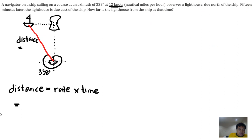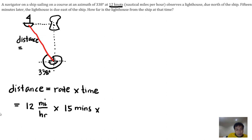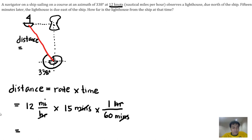The distance is 12 miles per hour times 15 minutes. To convert, we multiply by (1 hour / 60 minutes) so the minutes and hours cancel, leaving only nautical miles. So 12 times 15 divided by 60 equals 3. The distance traveled is 3 miles.